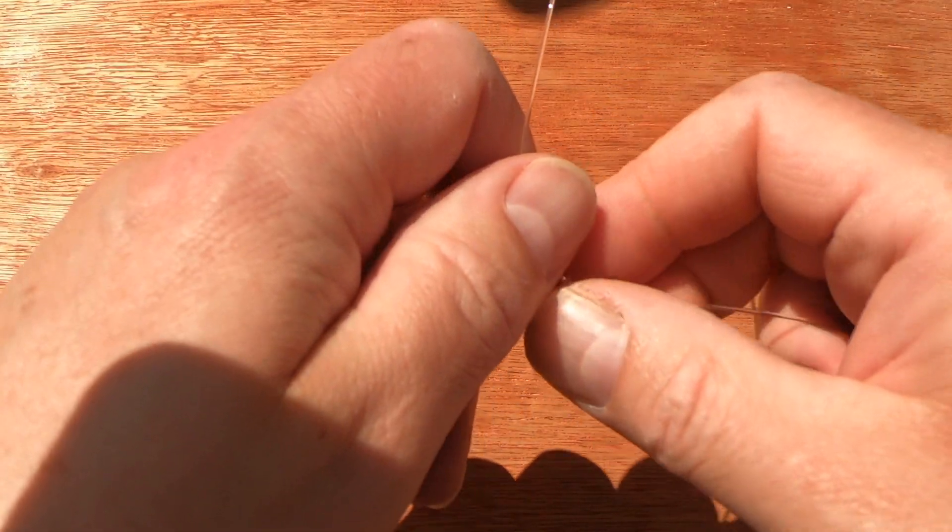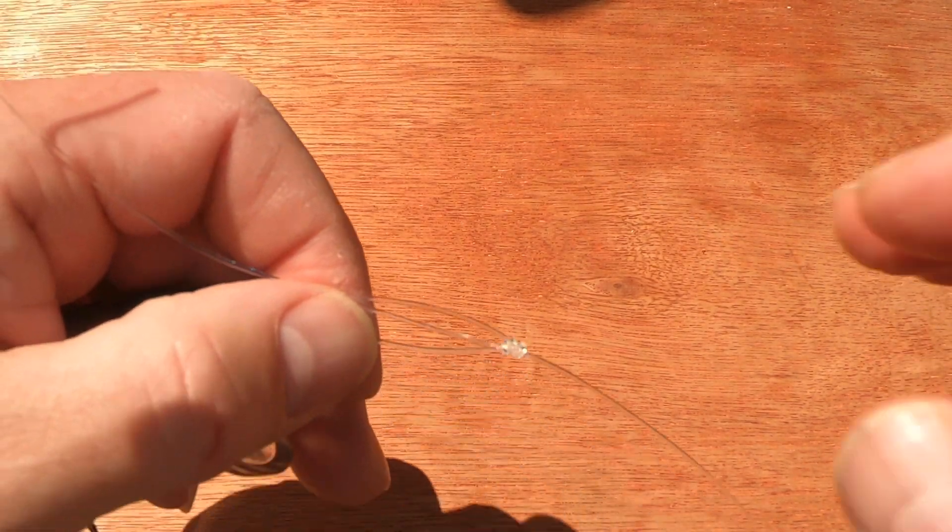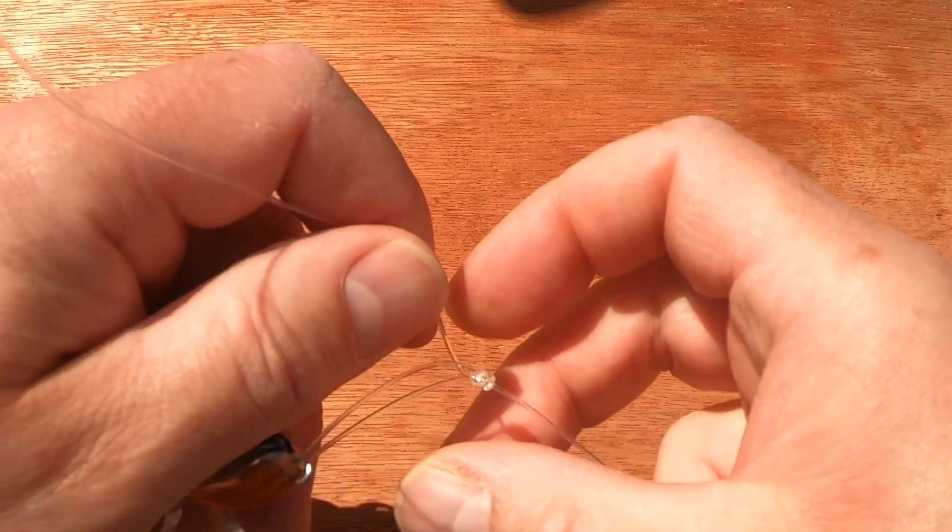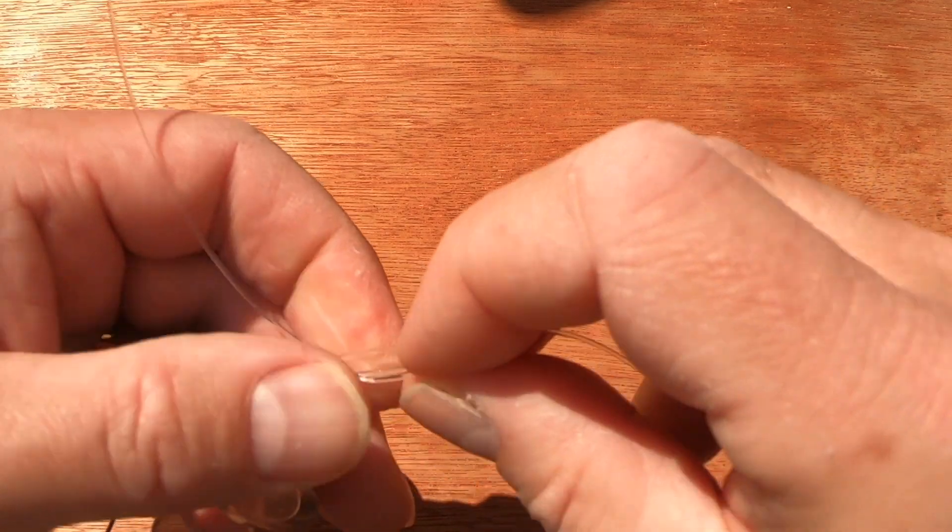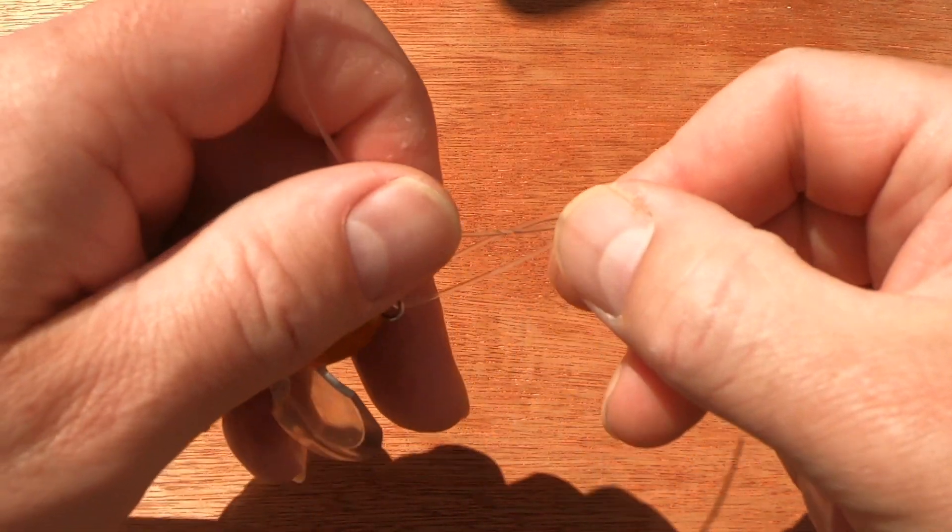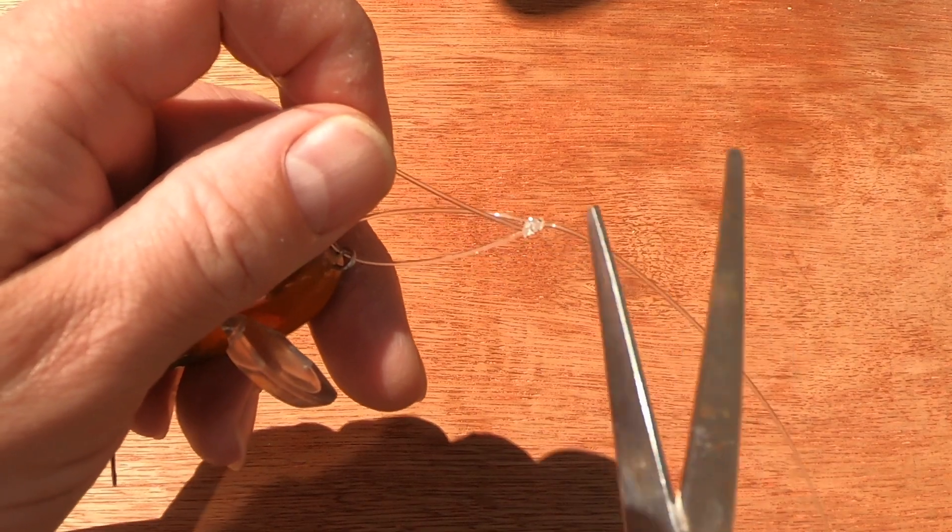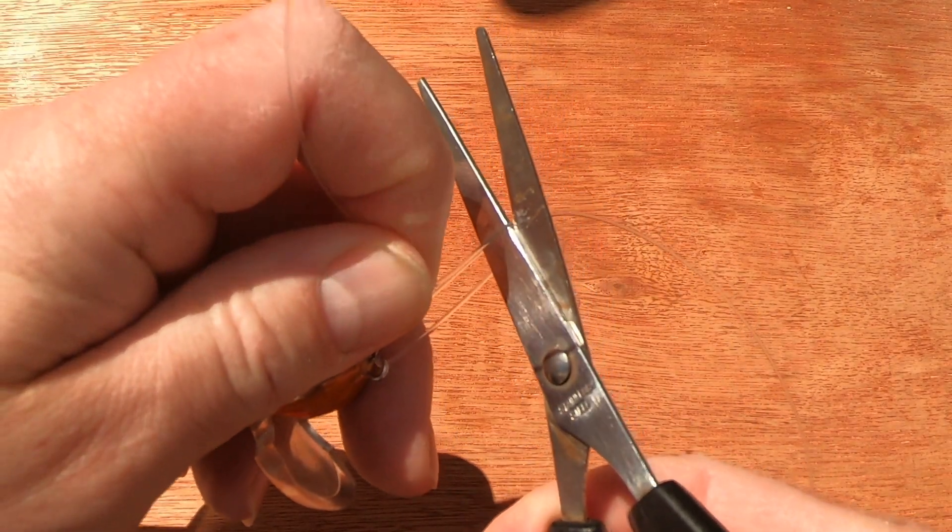And then I obviously get some pliers or my teeth in this case and pull it really tight. So what you're left with there now is your tag end facing downwards.